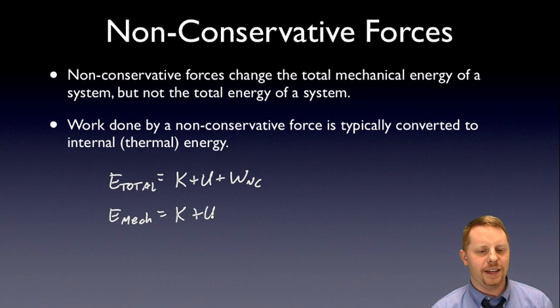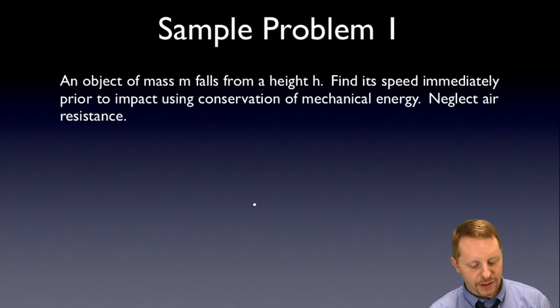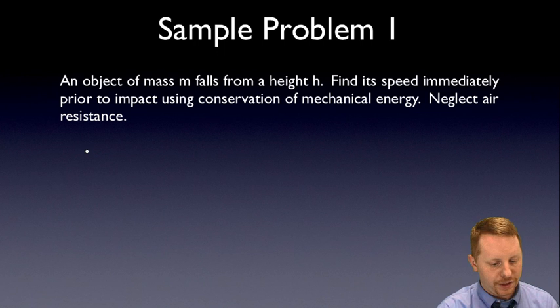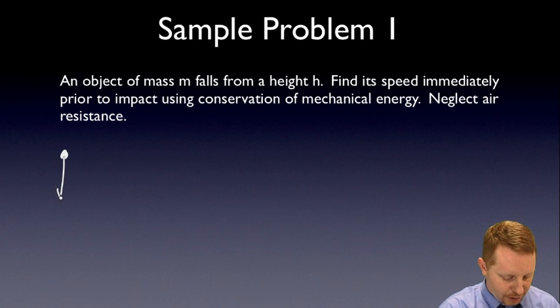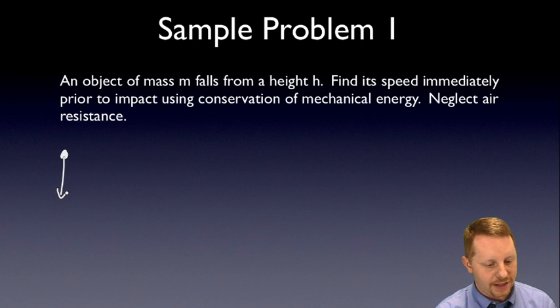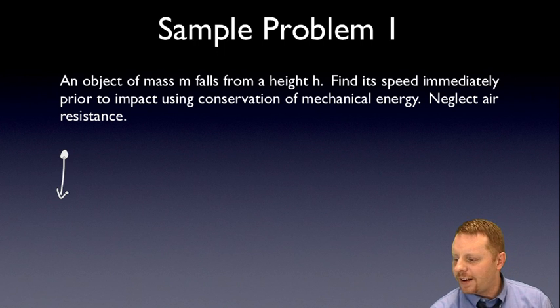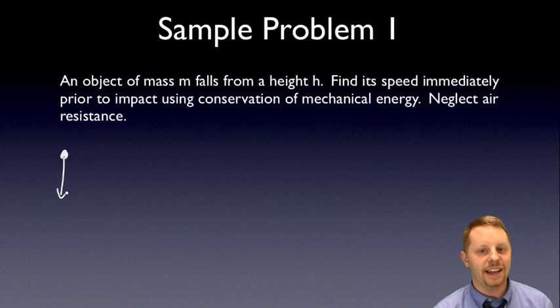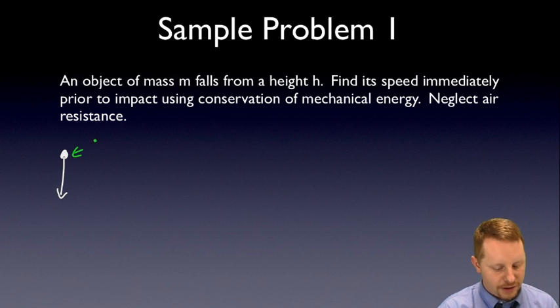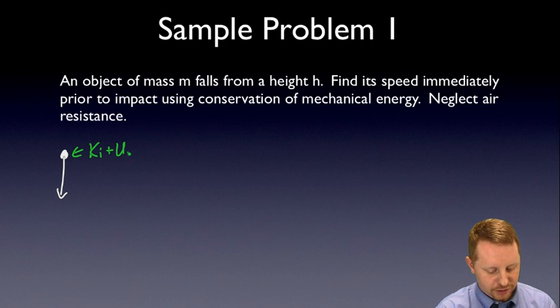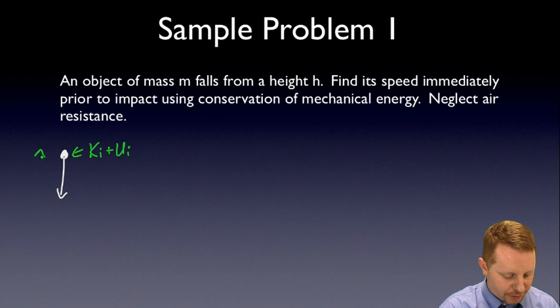Let's take a look at how we can apply some of these concepts of conservation of mechanical energy. First, we have an object of mass m falling from a height h. Find its speed immediately prior to impact using conservation of mechanical energy. We're going to neglect air resistance for this problem. When we do this, we know that at the top of its path, it has some initial kinetic and initial potential energy.